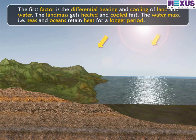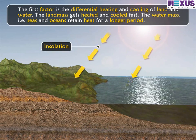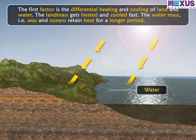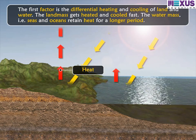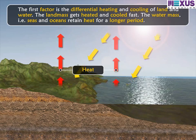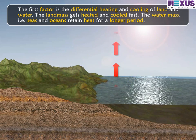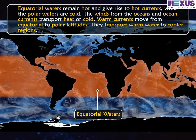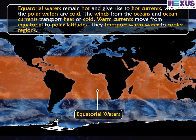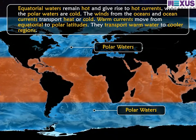The first factor is the differential heating and cooling of land and water. The landmass gets heated and cooled fast. The water mass, that is, seas and oceans, retain heat for a longer period. Equatorial waters remain hot and give rise to hot currents, while the polar waters are cold.